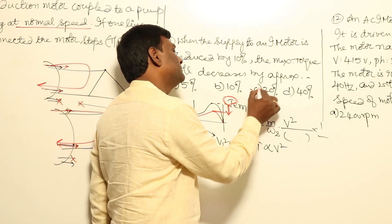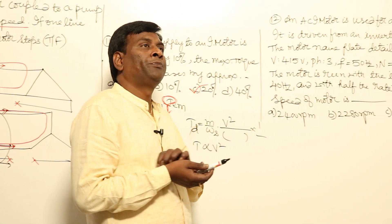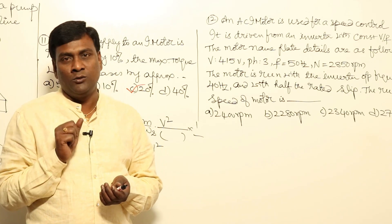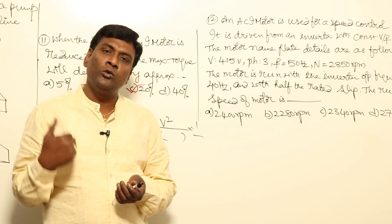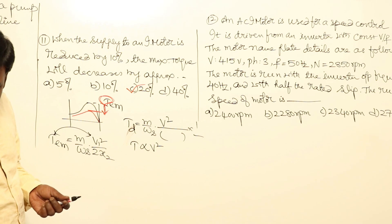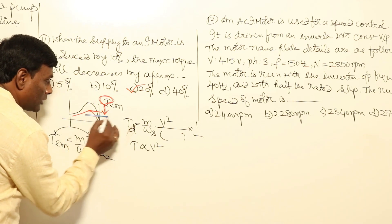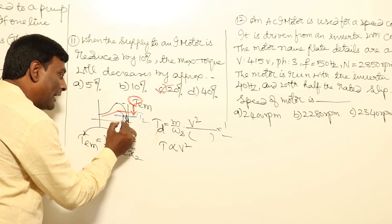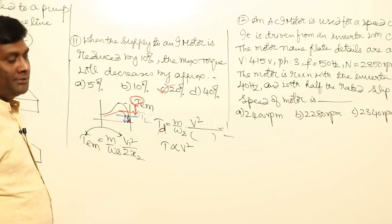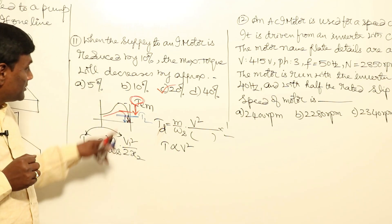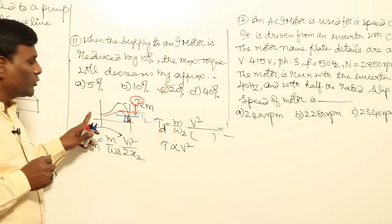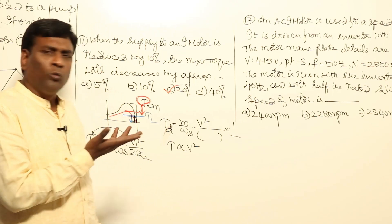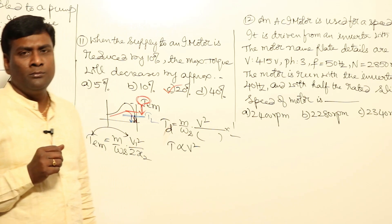That means roughly 20 percent. If an induction motor is designed for 400 volts and you reduce the voltage, you can maintain speed control — but we should not use this method because the pull-out torque will be reduced by the square of the voltage ratio. Starting torque is similarly affected. Point to note: speed control by voltage variation is not preferred. We will directly solve problems using the torque equation.